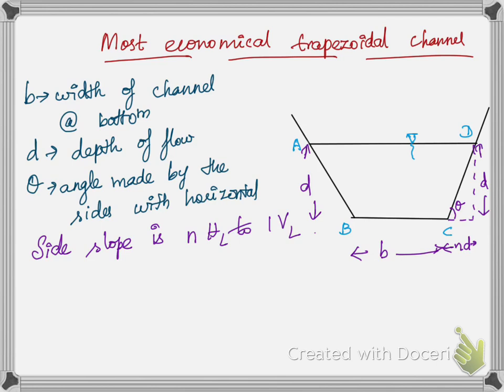Consider a trapezoidal channel section which consists of b as the width of the channel bottom, d as the depth of flow, and theta is the angle made by the sides with horizontal. The side slope is n horizontal to one vertical, which means the horizontal distance is n·d.